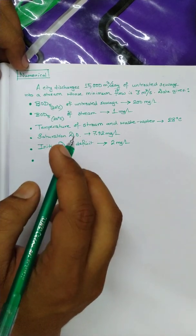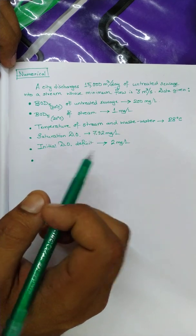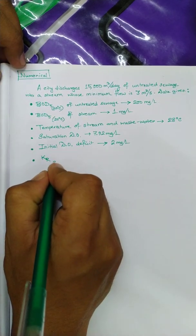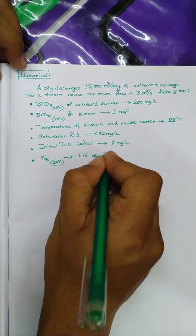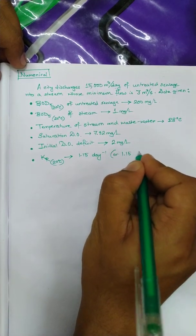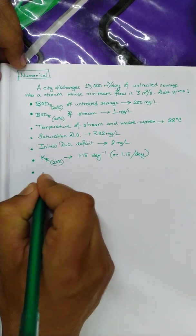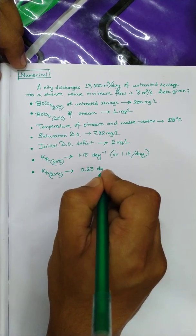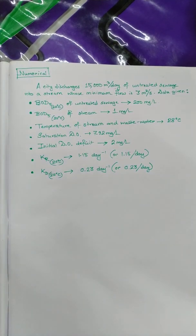Initial desired oxygen deficit is 2 milligrams per liter. We have Kr at 20 degrees centigrade which is 1.15 per day. Kr is the reoxygenation constant. And the last data is Kd at 20 degrees centigrade which is the deoxygenation constant, it is 0.23 per day.